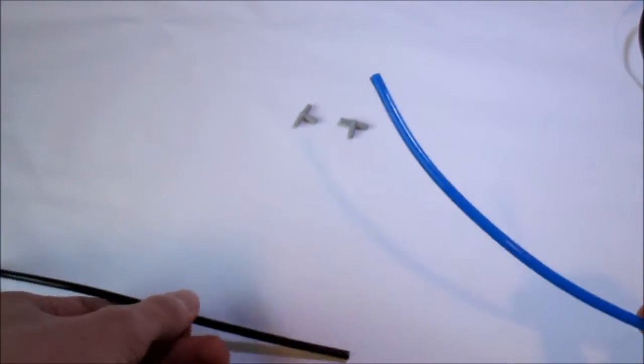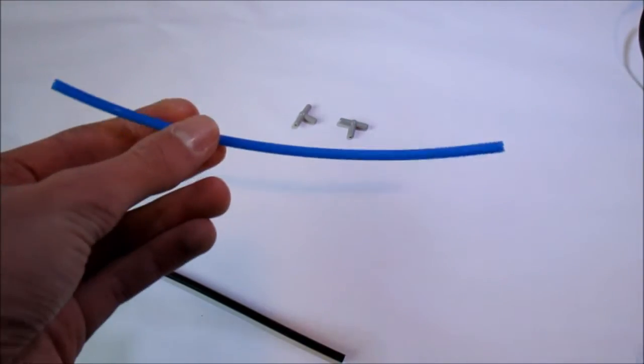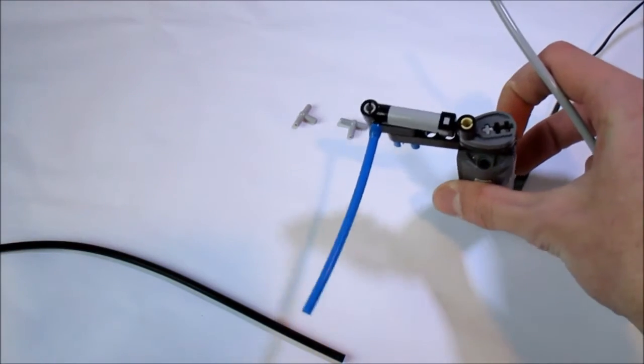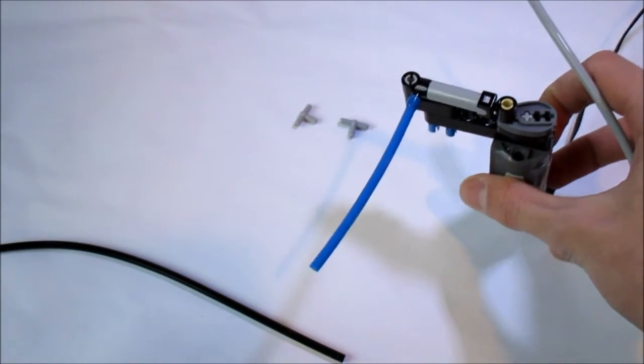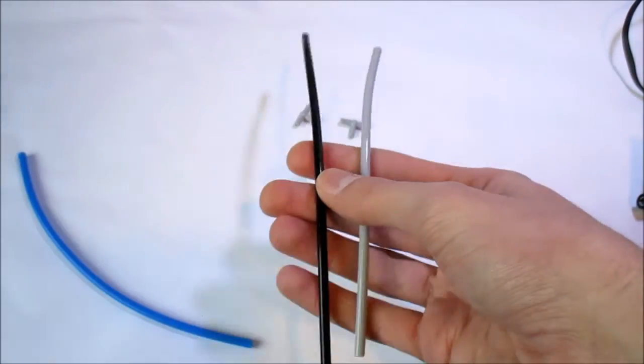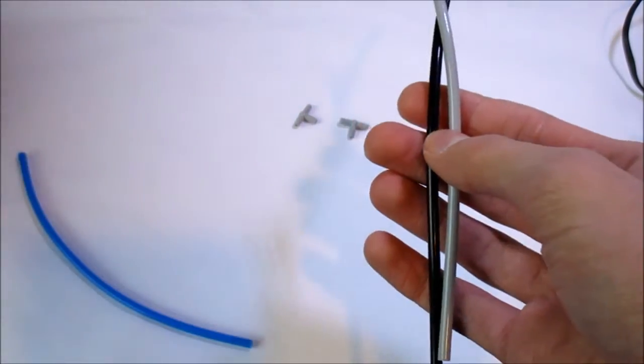Now how I personally do it and this is also how LEGO does it is we use the blue tubes that come directly off of the compressor and into the valves and stuff, and then the black and gray tubes are the ones that directly interface with your piston.